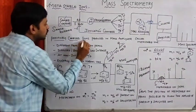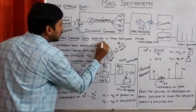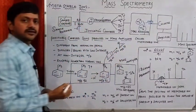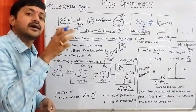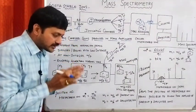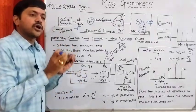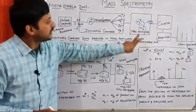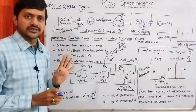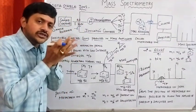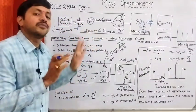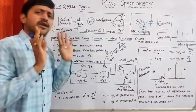Positively charged ions produced in the mass analyzer are commonly called metastable ions. Metastable ions are always produced in the mass analyzer, not in the ionization chamber. The ions which are produced in the ionization chamber are commonly called normal ions.